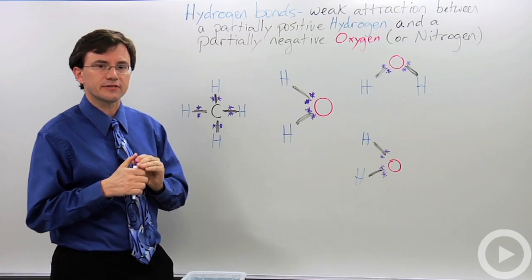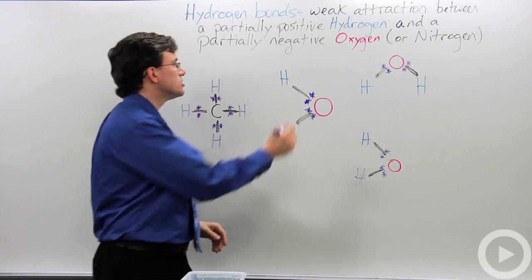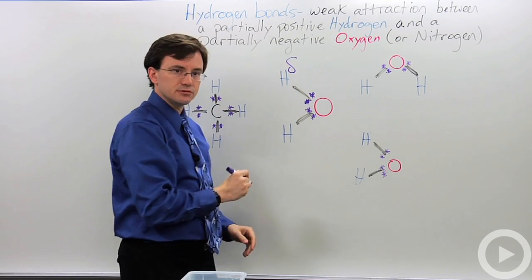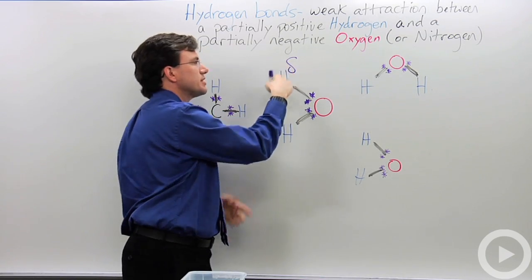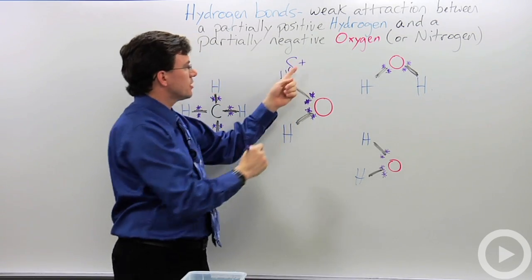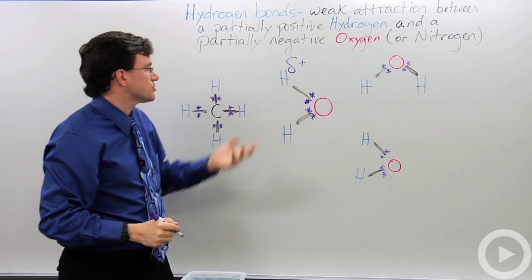Now, scientists don't like writing stuff that means it's easy to understand. So, they use the Greek letter delta, lowercase delta, to represent this slightly. I've always thought of it as kind of this weirdly cursive S, so I just think sorta.